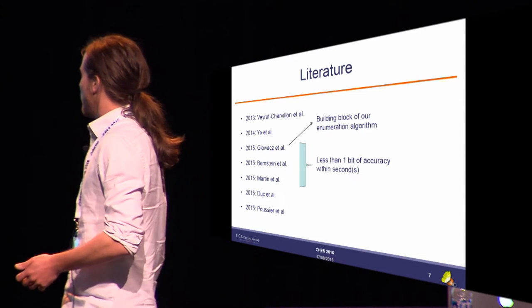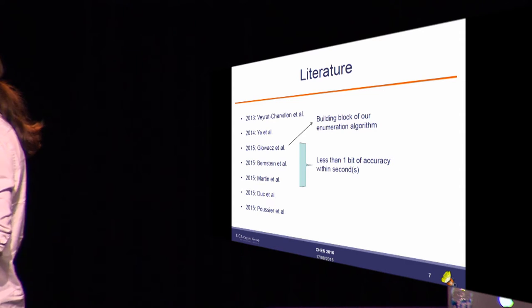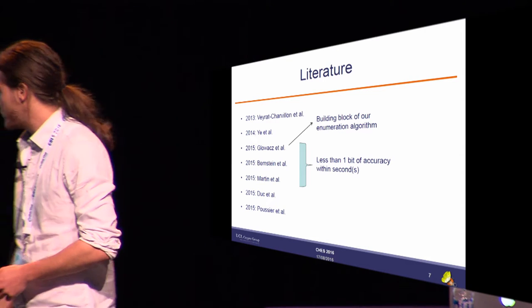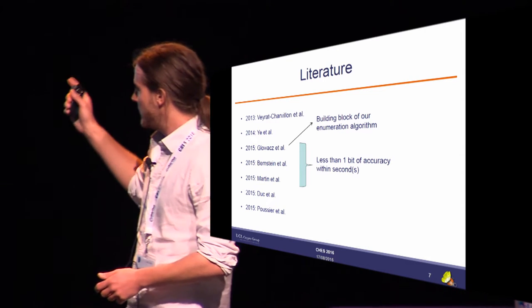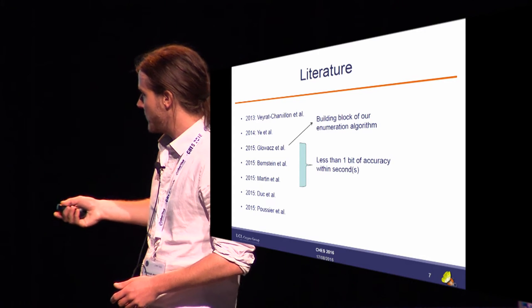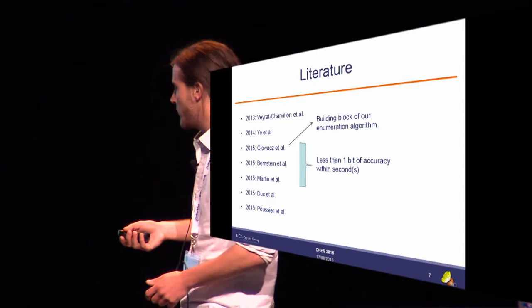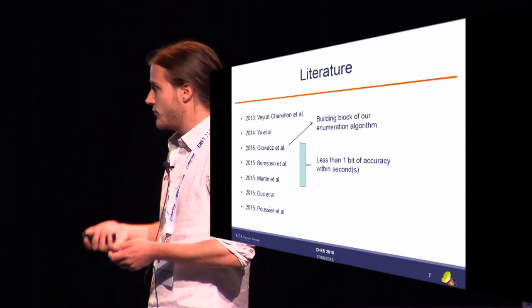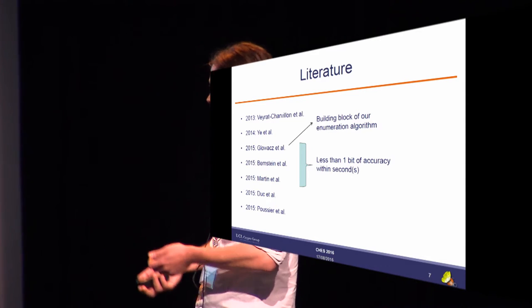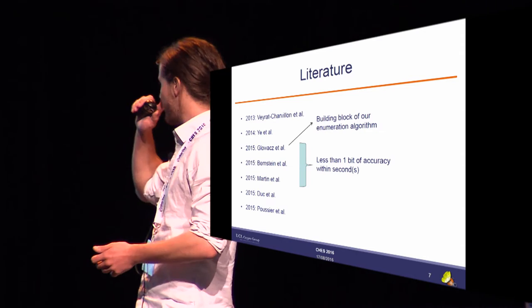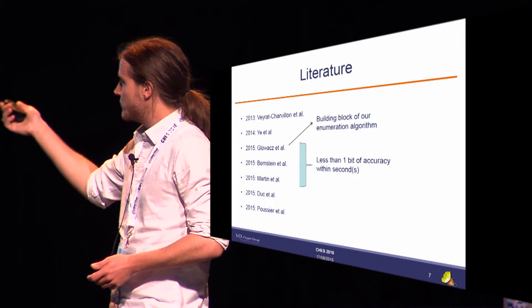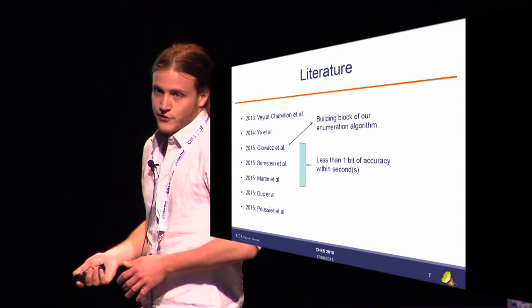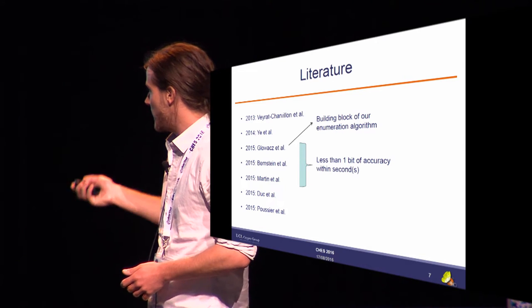Now about rank estimation — a quick look at the literature. We have many algorithms developed over a few years. Mainly three from Glowas, Bernstein, and Martin are very efficient: in a few seconds they give a very good estimate of the rank within one bit of accuracy. I will describe the algorithm of Glowas et al., because we build our key enumeration on their rank estimation algorithm.